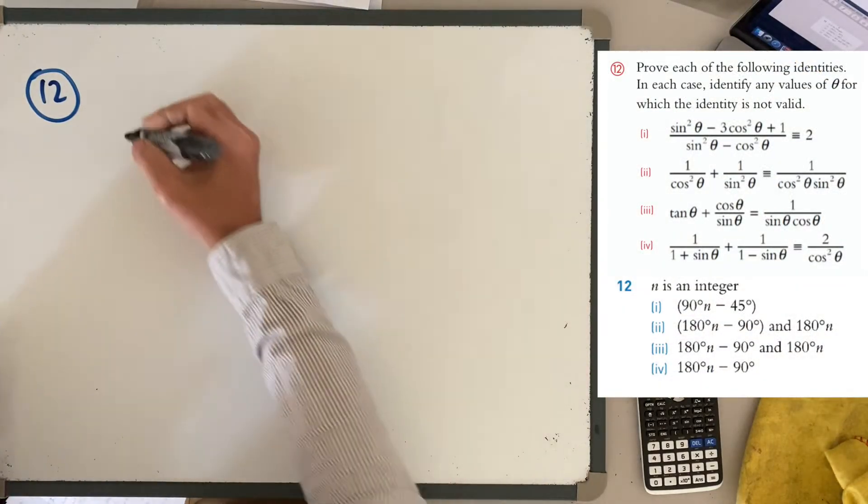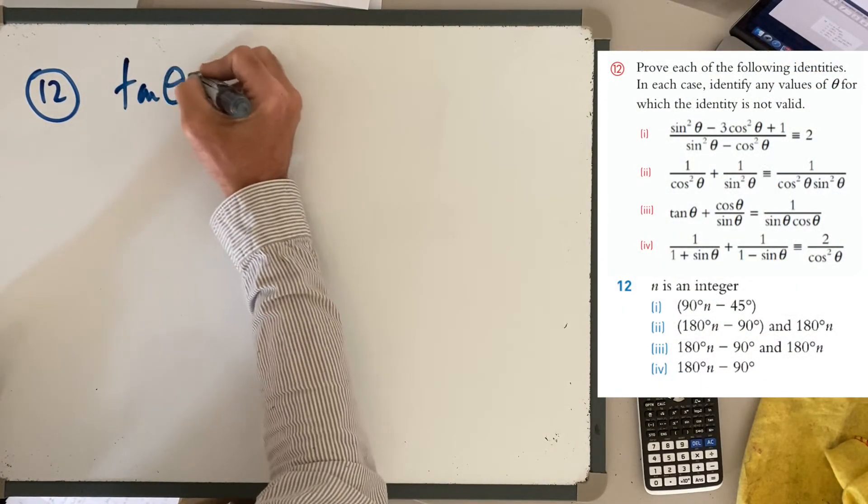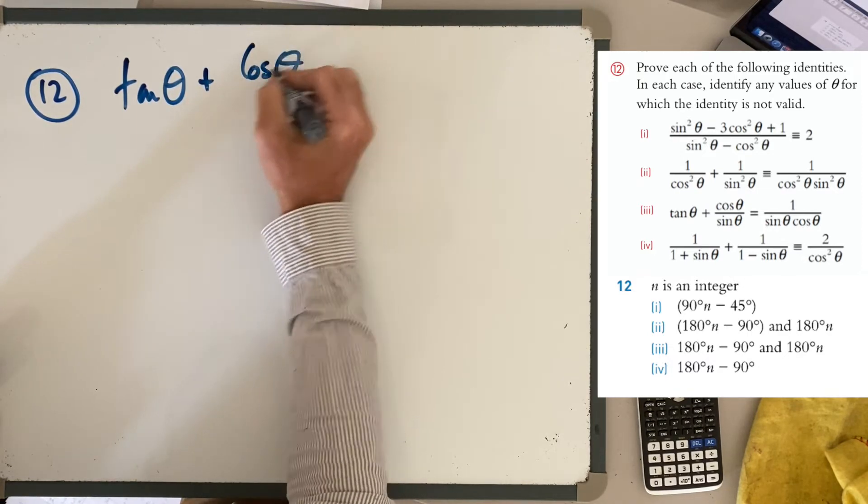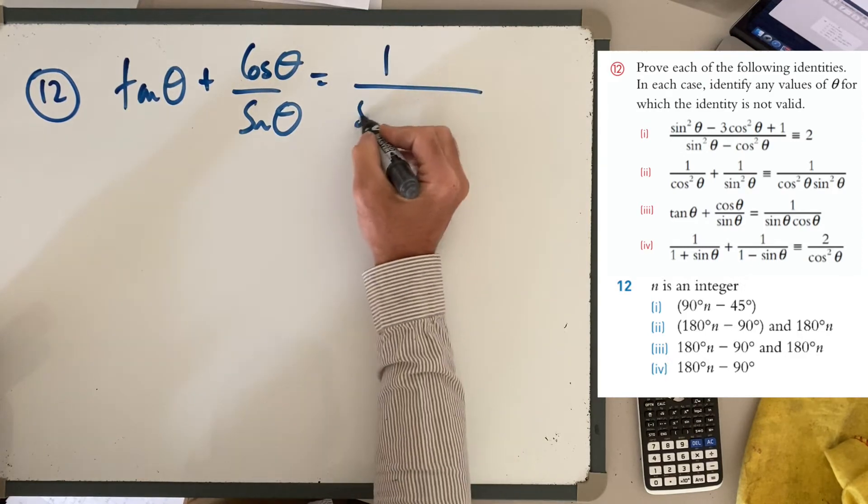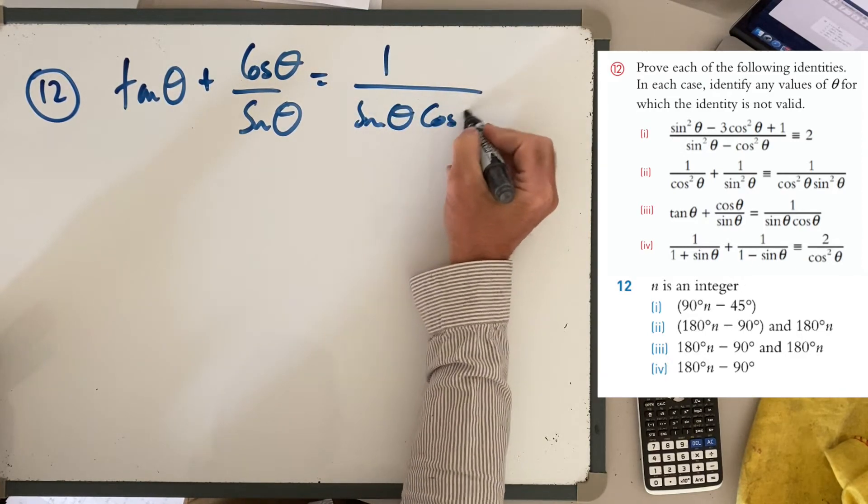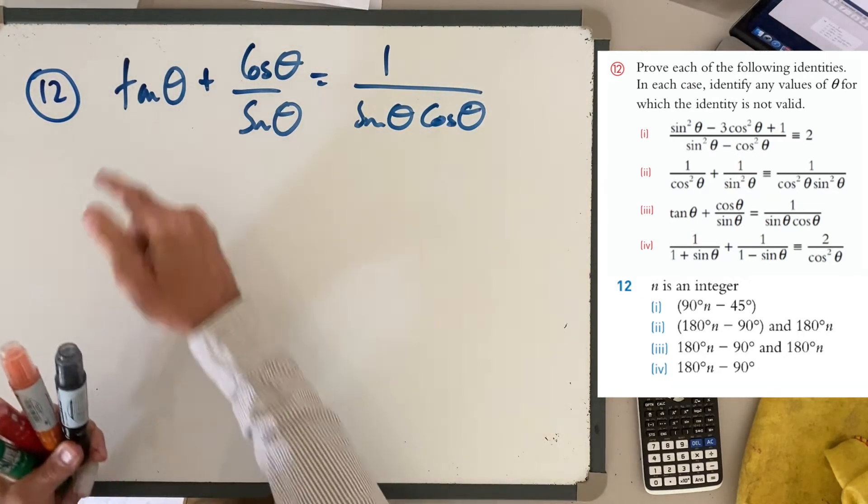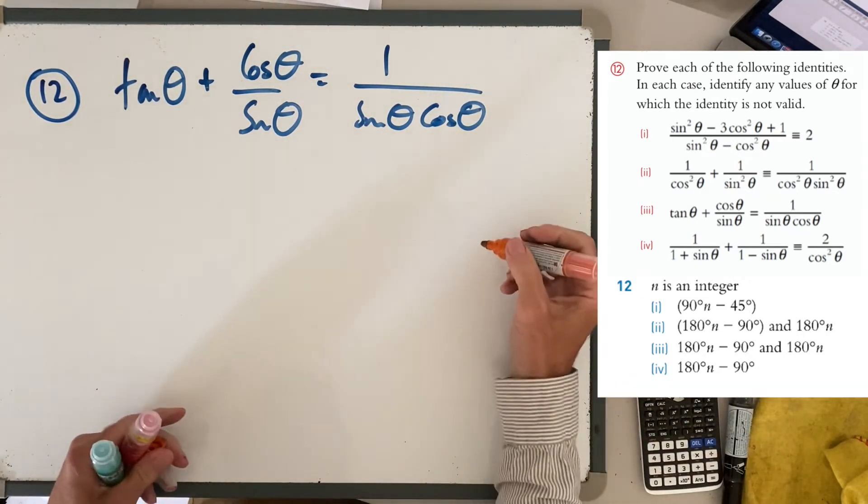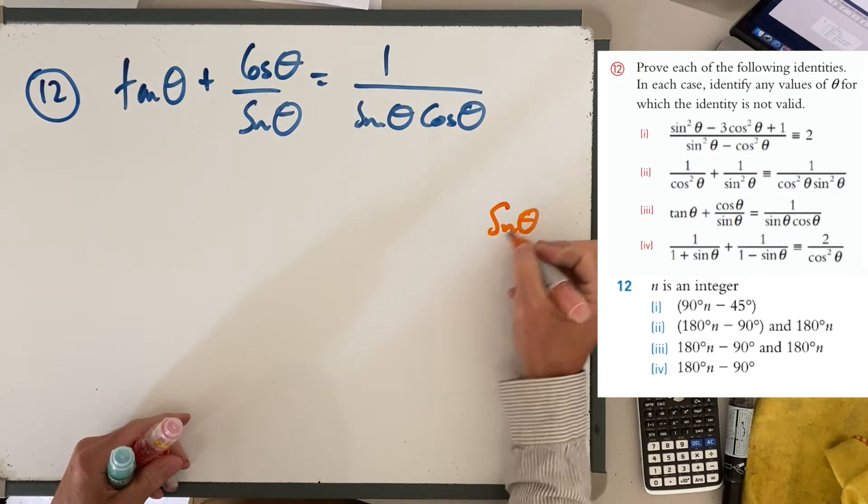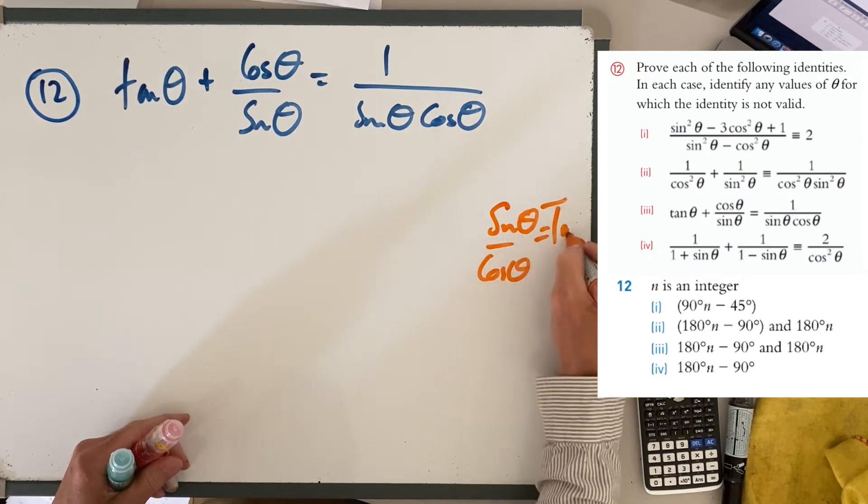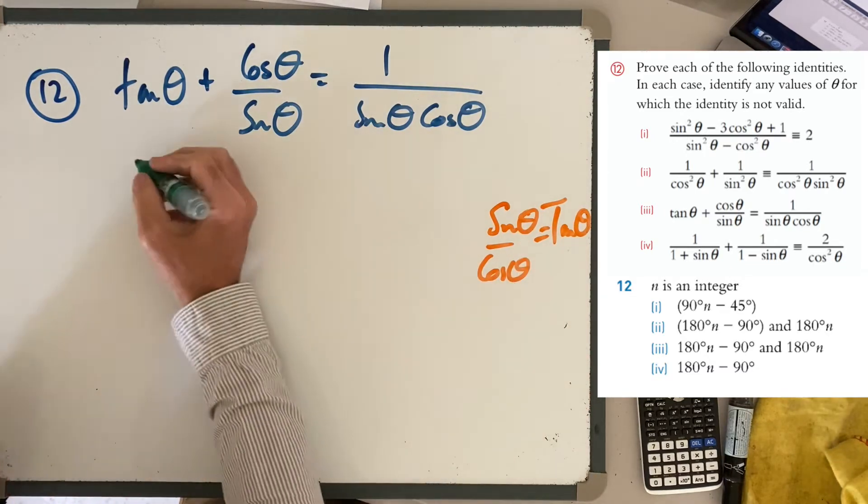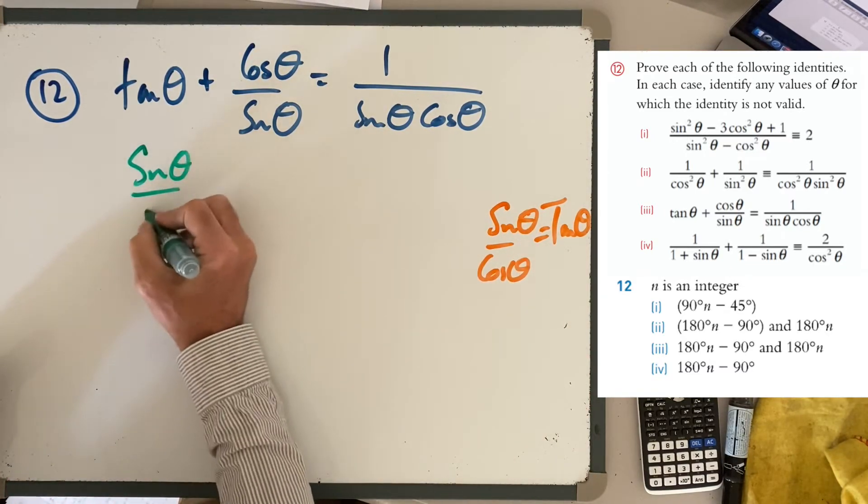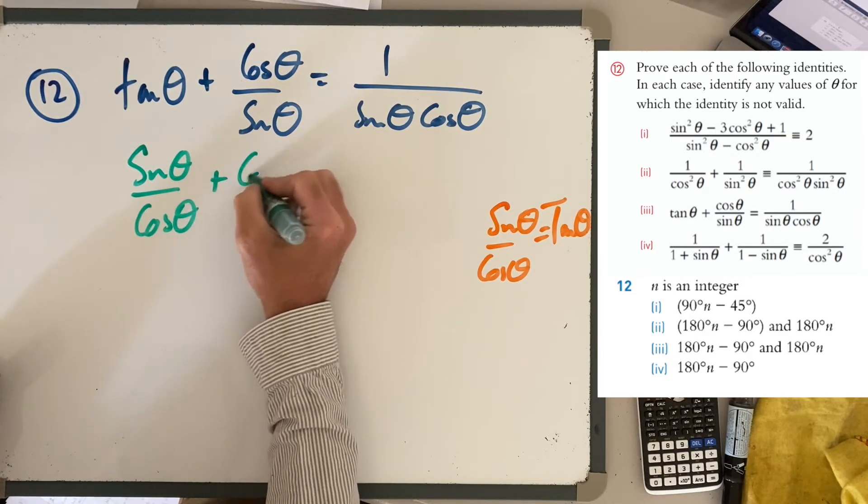Okay, third one: tan θ + cos θ/sin θ = 1/(sin θ cos θ). We've got tan here, so I'm thinking, well, sin θ/cos θ = tan θ. I've got everything in sine and cosine here, so I'm going to convert that one to sin over cos, plus this.